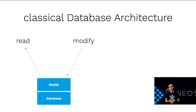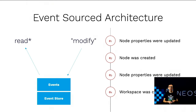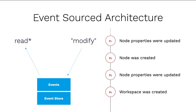In a classical database architecture, the world looks pretty simple: you have a database, a model you store in it, and you just modify and read from it. In the event-sourced world, instead of a database you use the event store, and instead of modifying a model you store events. An event is something like 'I updated a node,' 'I created a node,' 'I changed some properties,' 'I created a workspace.' The event log is a historical record of all changes made to the system. In classical architecture you only store the current snapshot; in event sourcing you store the full history.